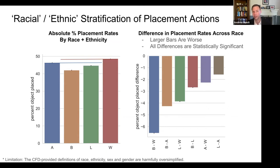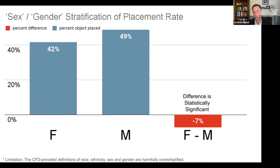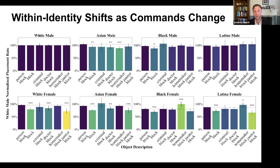There is also racial and ethnic stratification of placement actions, with discernible differences according to each race. The same is true of gender. When we evaluate within-identity shifts as commands change, malignant stereotypes show up. Normalizing for White male placement rate, the 'doctor block' command is significantly less frequent for White female than for White male. And for Black female, the 'homemaker' command is significantly more frequent than for White male. These are malignant stereotypes.